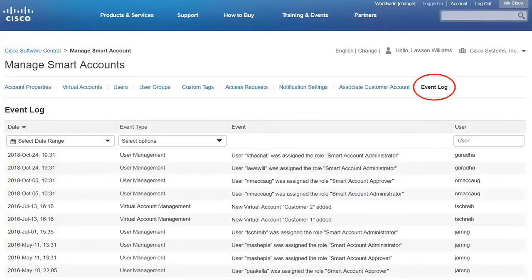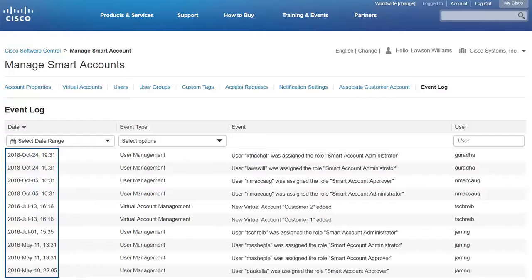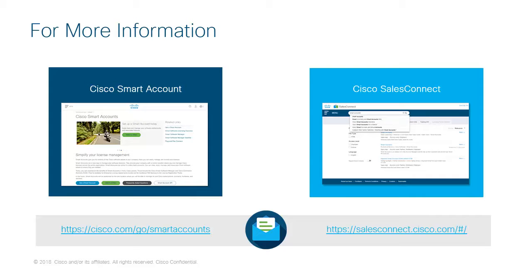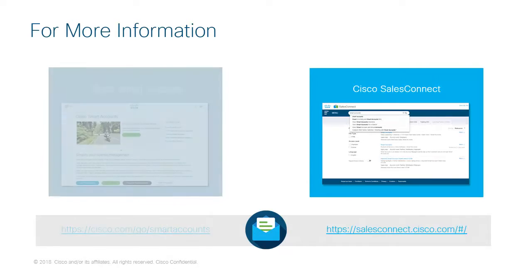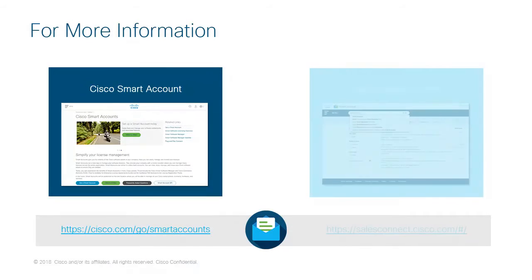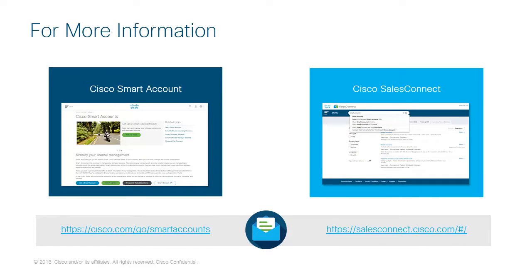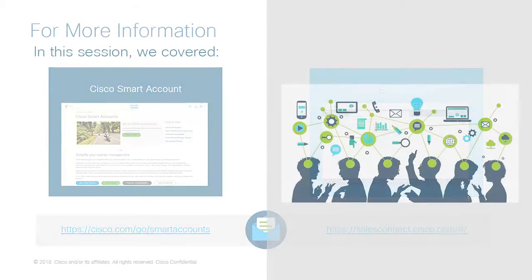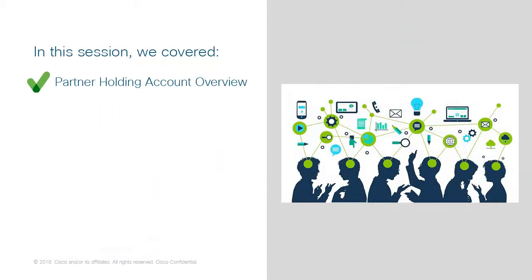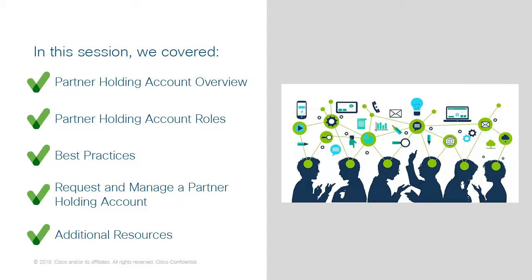Finally, the Event Log shows the history of all transactions related to the Partner Holding Account. If you are looking for additional resources, check out the Cisco Smart Account Homepage and Sales Connect for more information. Thank you for watching this video covering a high-level overview of Cisco Partner Holding Accounts.